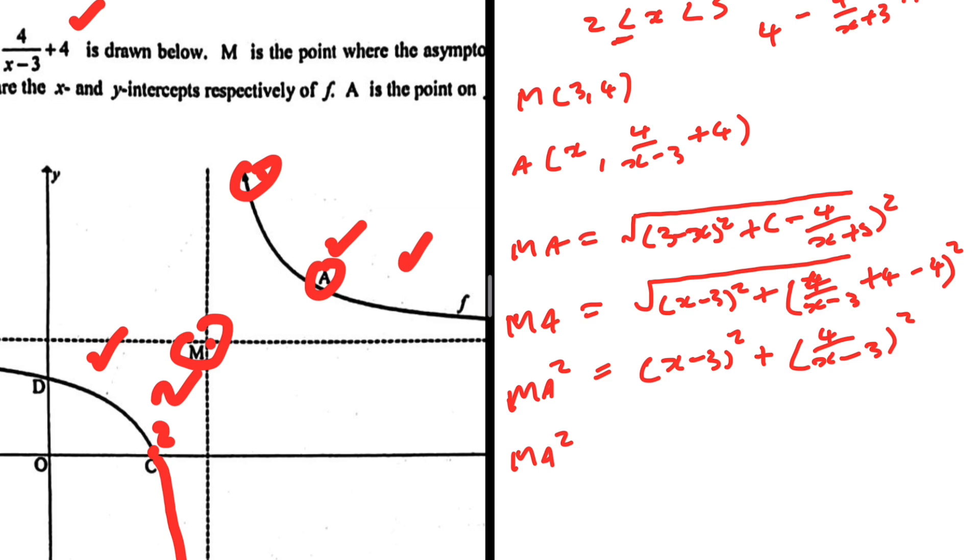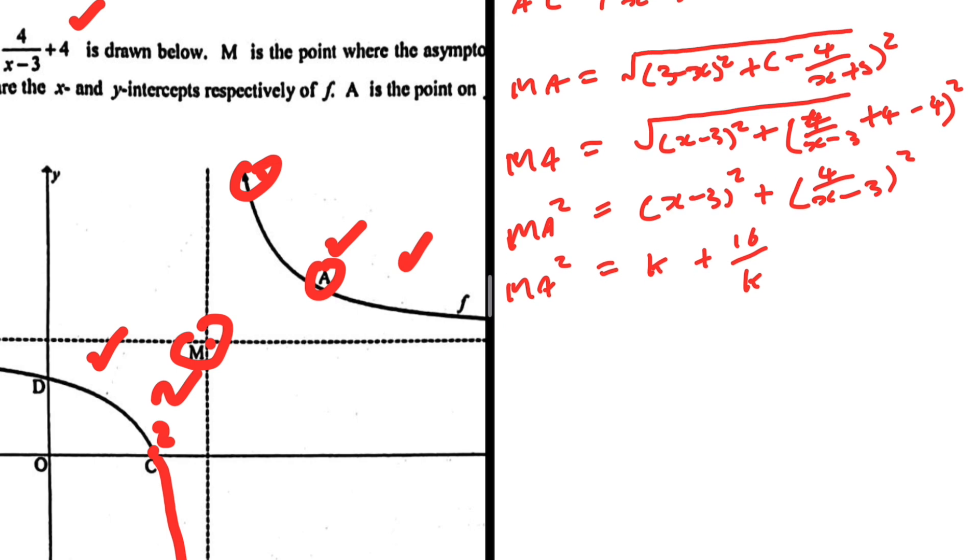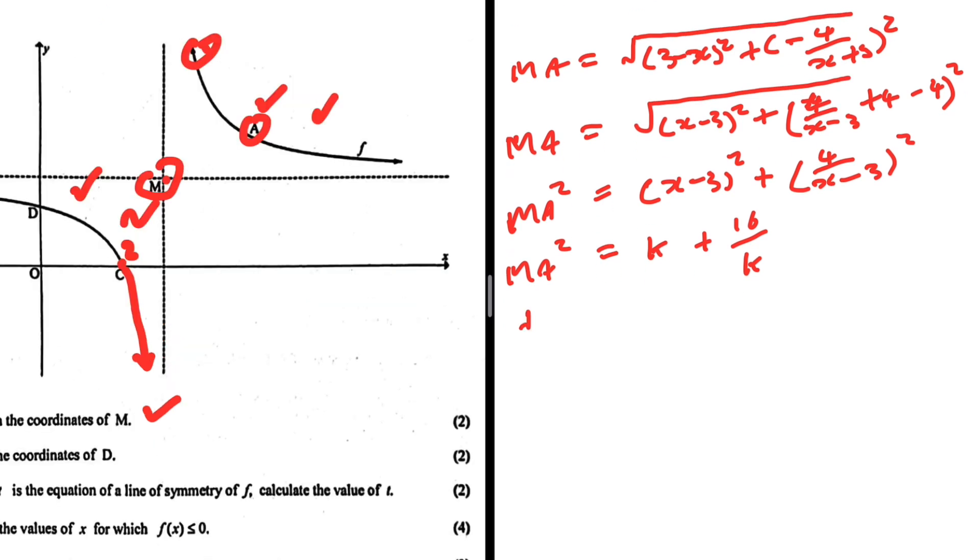Let's let x minus 3 squared be equals to k. So MA squared would be equal to k plus 16 over k. If we differentiate this with respect to k, we'll get, so when we differentiate k, we just get 1.